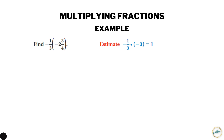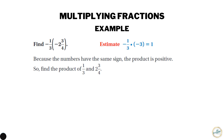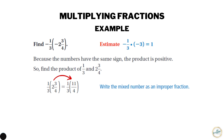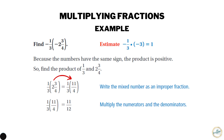Our answer needs to be somewhere around one. Because the numbers have the same sign the product is positive, so find the product of one-third and two and three-fourths. We need to write the mixed number two and three-fourths as an improper fraction: two and three-fourths equals eleven-fourths, because two times four is eight, plus three is eleven. Then one-third times eleven-fourths — multiply straight across — gives eleven on top and three times four is twelve on the bottom: eleven-twelfths.